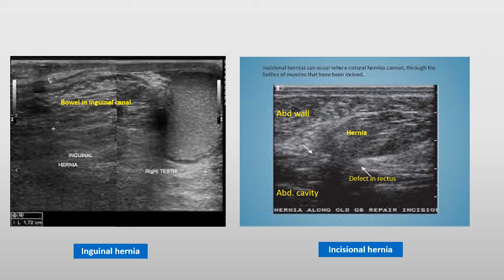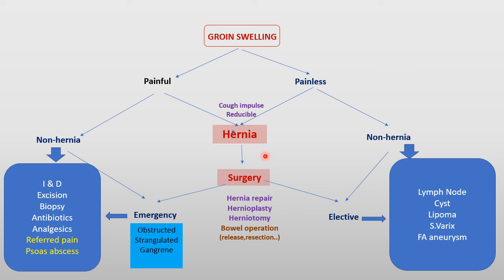This is a management algorithm for a patient with a groin hernia. I prefer to classify by painful and painless, though some classify as reducible and irreducible. The painful ones can be divided into hernia and non-hernia. Hernia — most commonly inguinal — usually needs surgery as the only definitive treatment, either emergency or elective. Emergency is when there are complications like irreducibility, incarceration, or strangulation, requiring immediate operation.